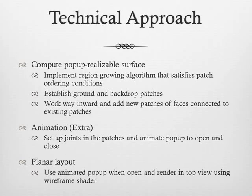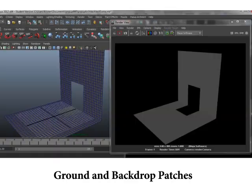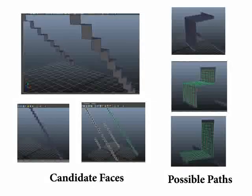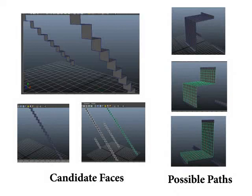We then compute the pop-up realizable surface through a region-growing algorithm which satisfies patch ordering conditions. We establish the ground and backdrop patches and then work our way inwards, adding new patches of faces that are connected to existing patches.